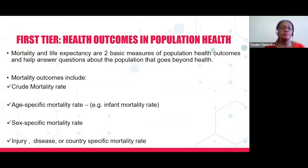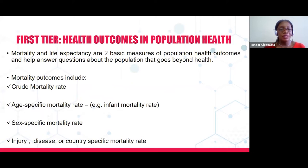Looking at the first tier — health outcomes — when talking about population health, mortality and life expectancy are two basic measures that help answer questions about the population that go beyond health. Mortality outcomes can include crude mortality rates, age-specific mortality rates such as infant mortality rates, sex-specific mortality rates, and injury, disease, or country-specific mortality rates. I would like us to put in the chat box some examples of age-specific and disease-specific mortality rates that can be used as indicators to measure health outcomes.